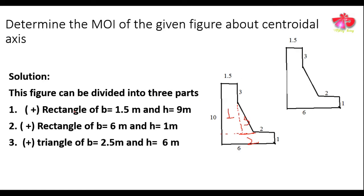We have reduced the given composite figure into rectangular and triangular components. The rectangle section one, rectangle section two, and the triangle section three are all positive — since adding all three together forms the original composite figure. Now our job is to calculate the centroid of this composite figure.